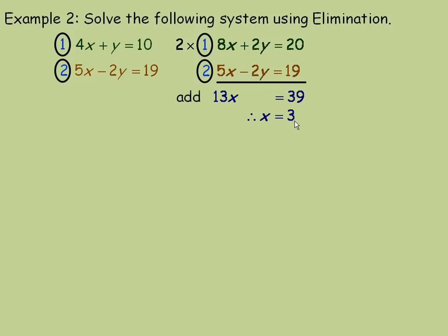Now we need to find y. So I'm going to take the first equation and we're going to put 3 in place of x here. And then solve for y. So 10 minus this 12 is negative 2. So y equals negative 2.